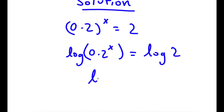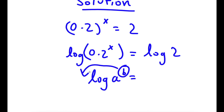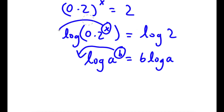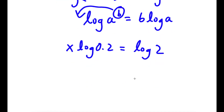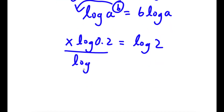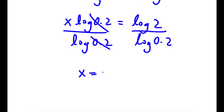If I have something in the form log a to the power of b, I can move b to the front, so this equals b times log a. In this case, I have log 0.2 to the power of x, and I can move x to the front. So now I have x times log 0.2 is equal to log 2. If I divide both sides by log 0.2, I get x is equal to log 2 over log 0.2.